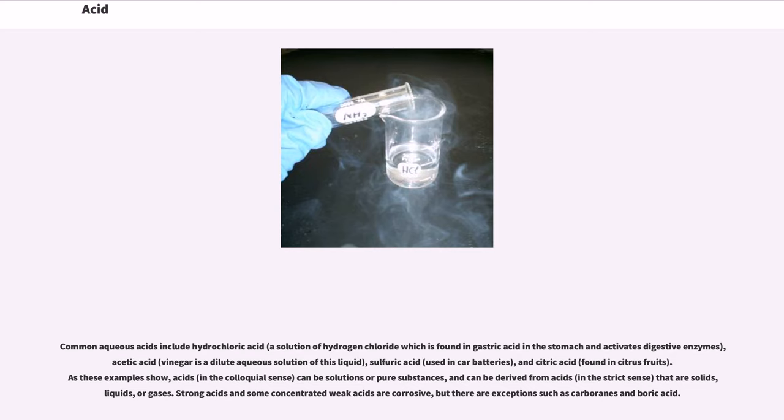As these examples show, acids in the colloquial sense can be solutions or pure substances and can be derived from acids in the strict sense that are solids, liquids, or gases. Strong acids and some concentrated weak acids are corrosive, but there are exceptions such as carboranes and boric acid.